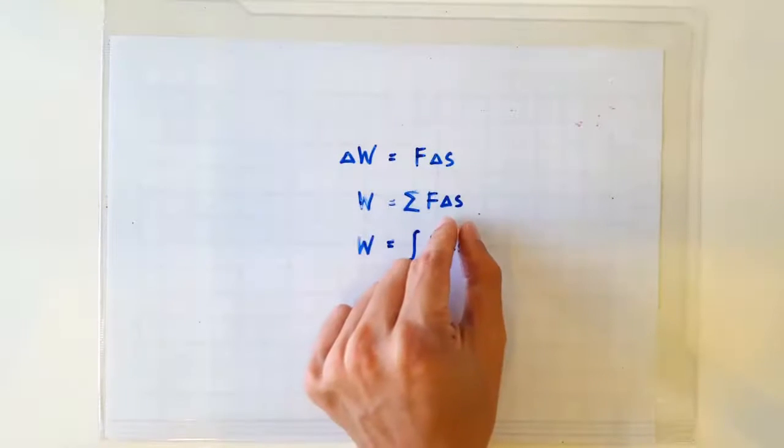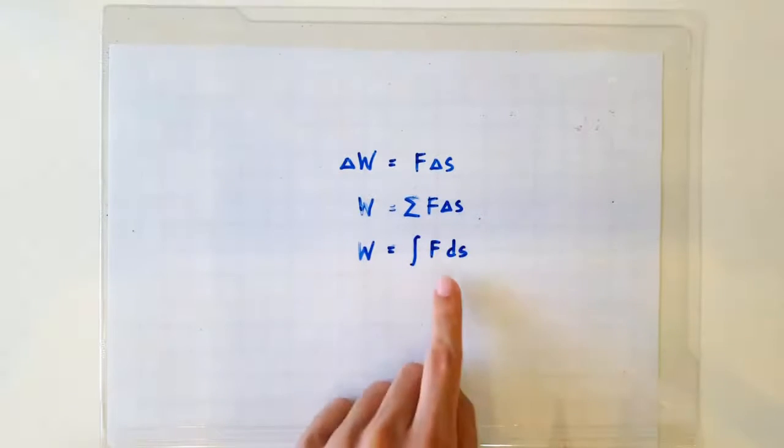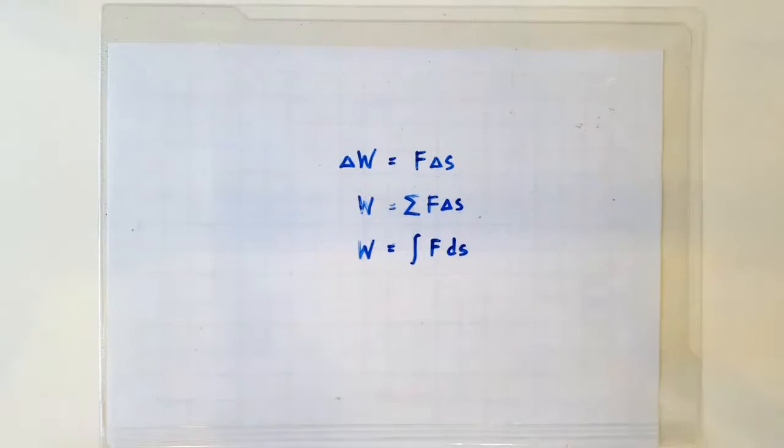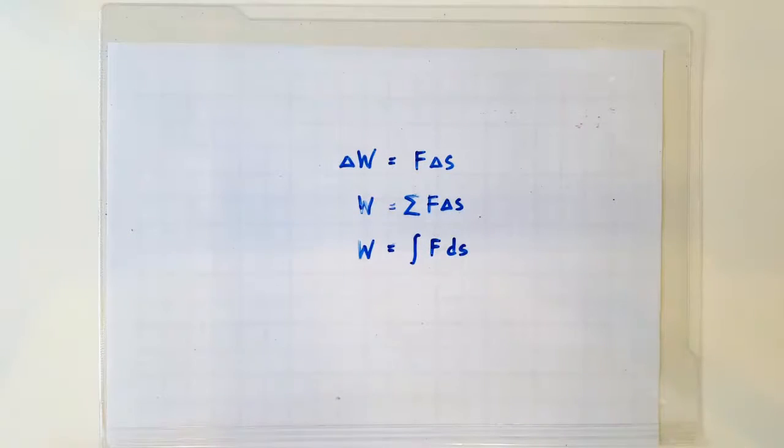If delta S is incredibly small, then this term is actually equal to this, which is the area under the Fs graph. Ok, that's all. Ta-ta!